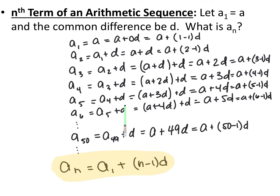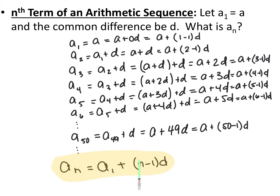a sub 5 is a plus 4d, and a sub 6 is a plus 5d. Every single time, we're adding d one less time than the term number — even a sub 1 is a plus (1 minus 1)d. So for a sub 50, you start with the initial term and add the common difference 49 times: a plus 49d. The explicit formula for arithmetic sequences is a sub n equals a sub 1 plus (n minus 1) times d, as long as you start at term 1.